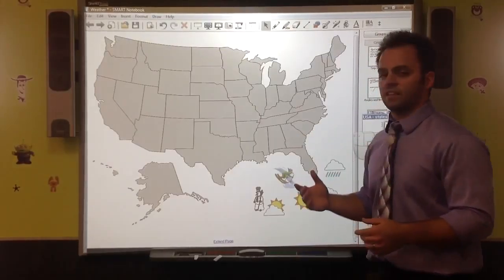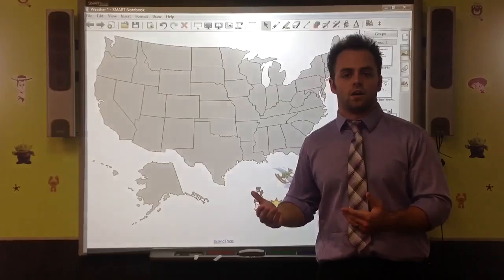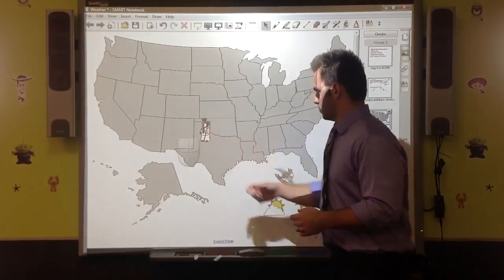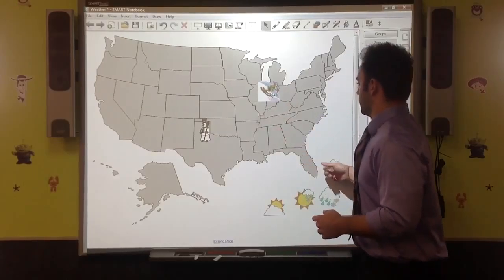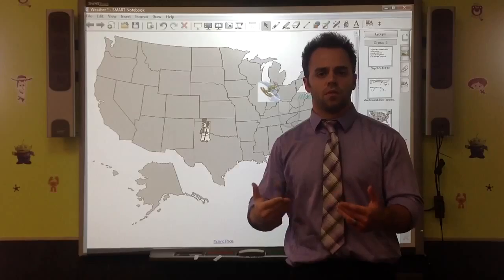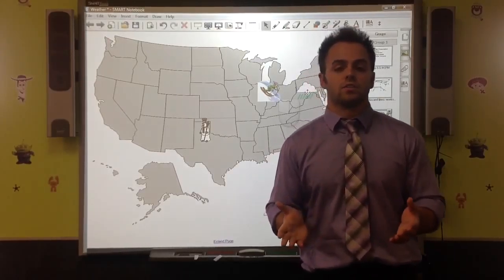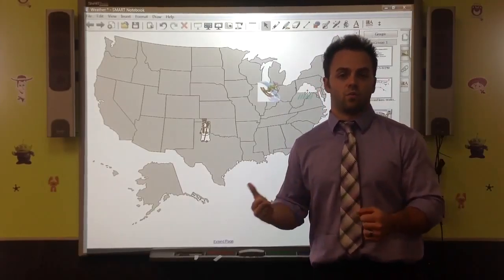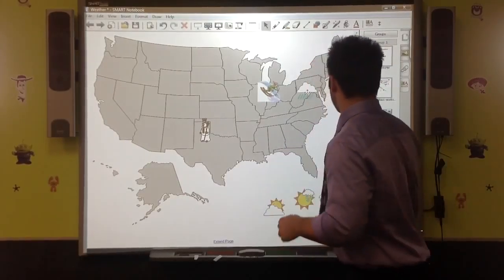And even with science class, putting a weather map on the board and having them come over and put the different weather in the different states to show them that they can do that on their own. And help them maybe even figure out that they could be a meteorologist in the class to integrate that into a reading lesson with weather or even with tornadoes.